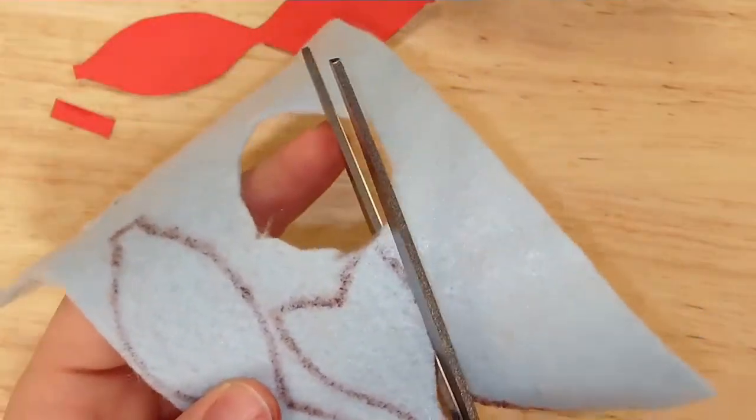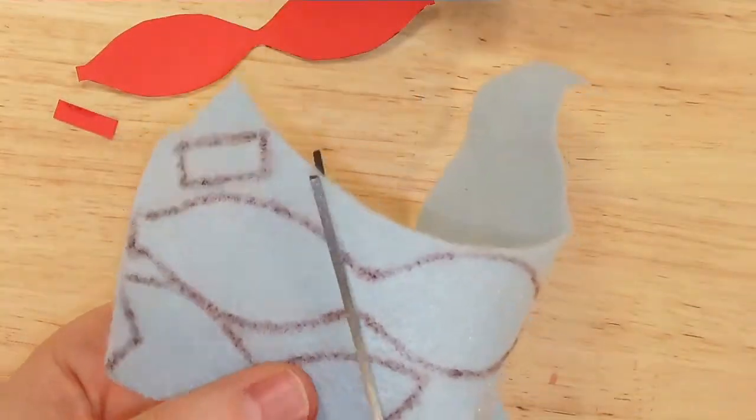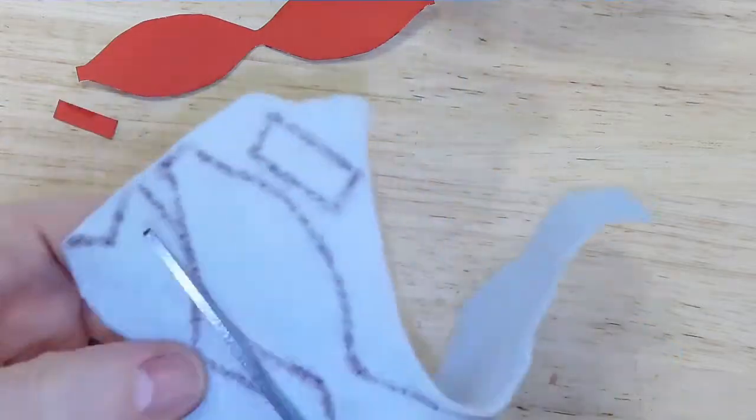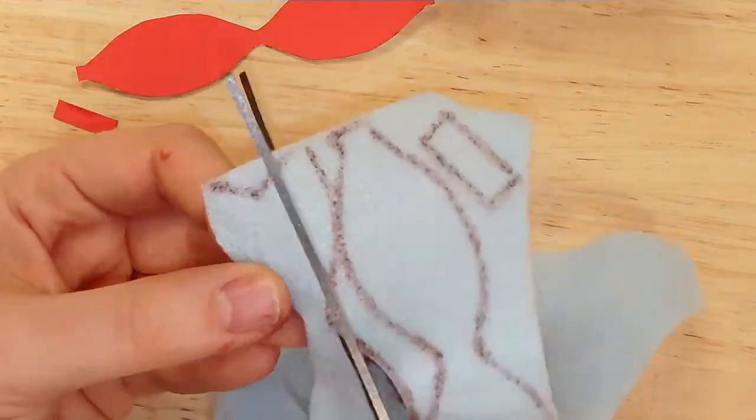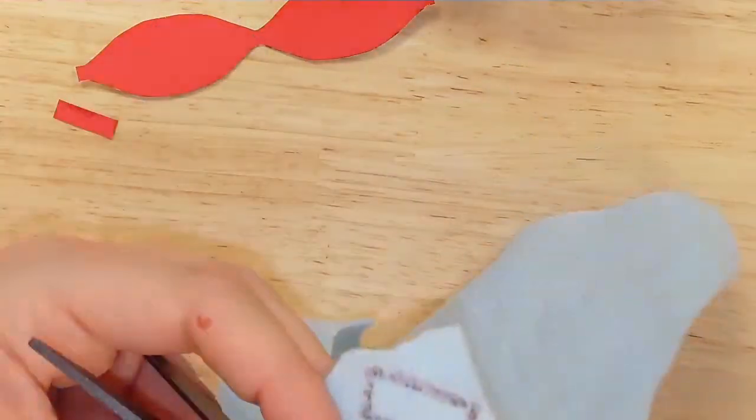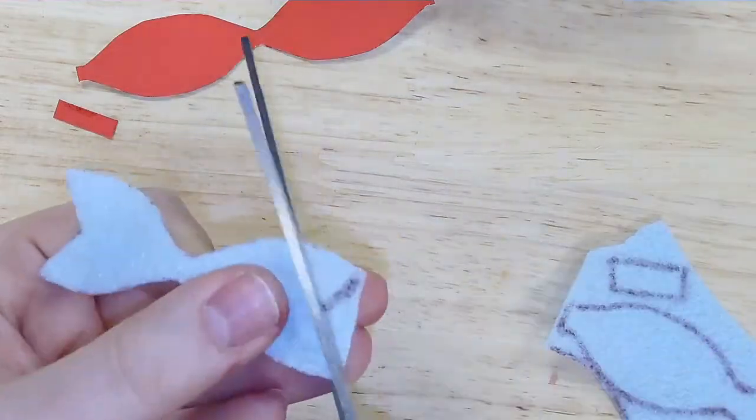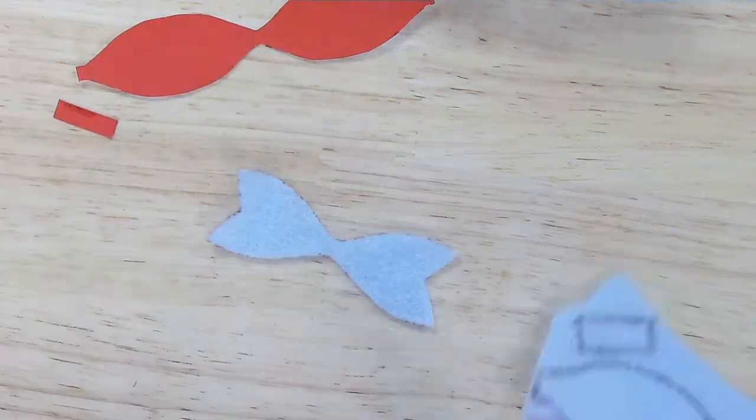Then you want to carefully cut out the felt parts. And for the bow, I would suggest trying to trim off all the edges of the marker that you might see. Although if you like the way it looks, if you've used a color coordinating pen that you like, then that's fine too.